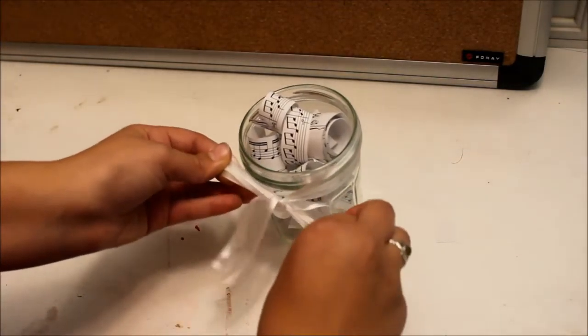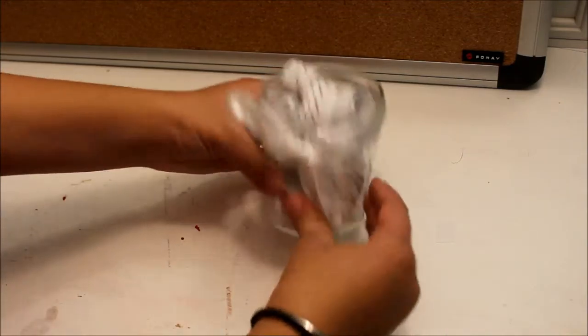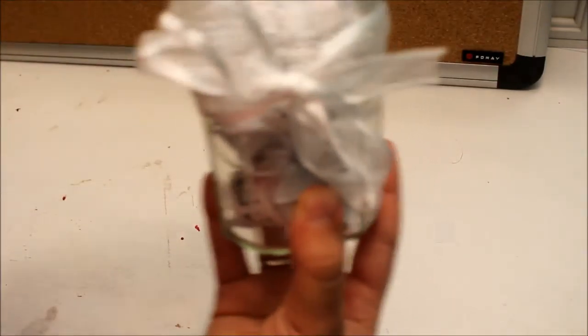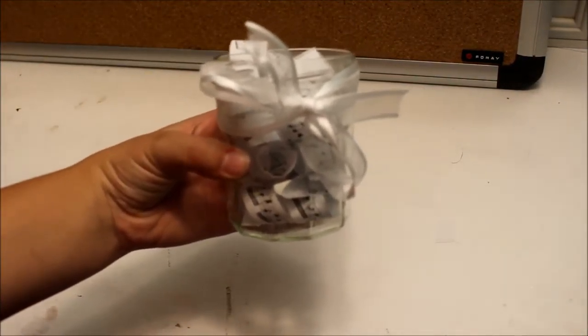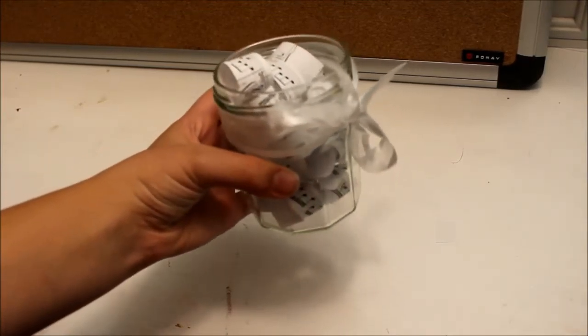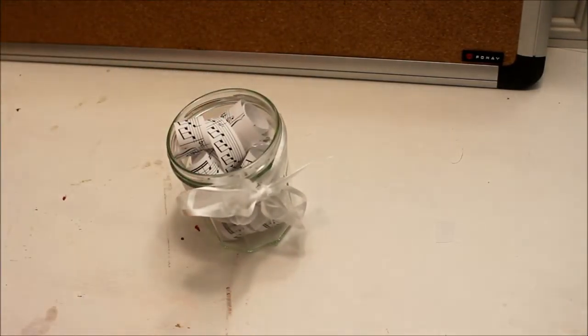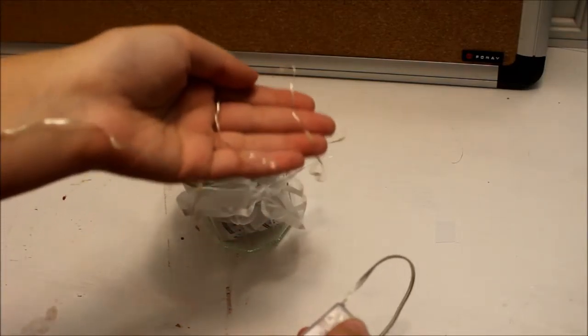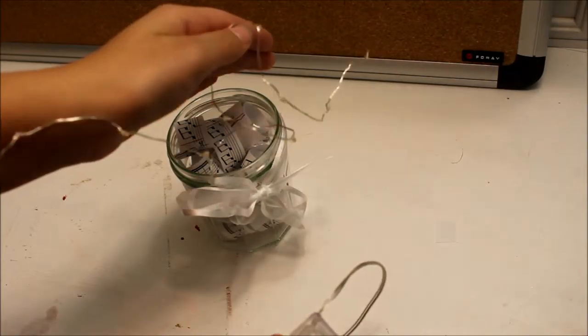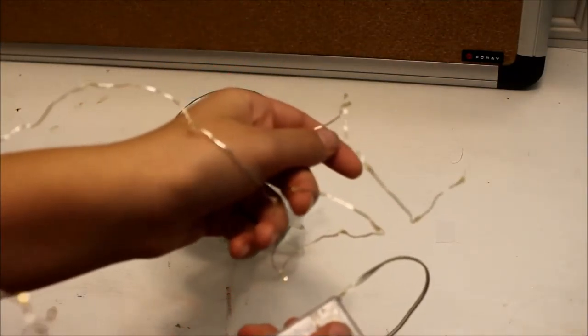And I actually have fairy lights, those cute little wires of lights that you can get at a Christmas tree shop or Joann's Fabrics, and I just have them sitting around. So what I decided to do is just take out the paper from the jar and just put those little lights inside of there. They light up.